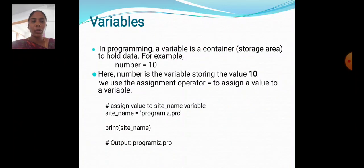Next, variables. In programming, a variable is a container storage area to hold data. For example, number equal to 10. Here, number is the variable storing the value 10. We use the assignment operator equal to, to assign a value to a variable.